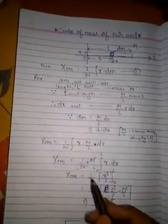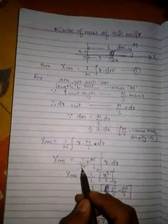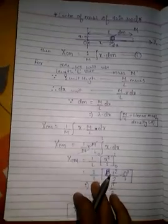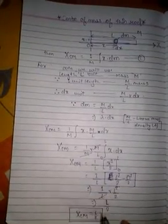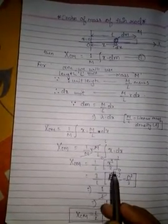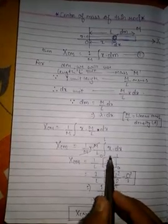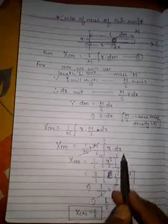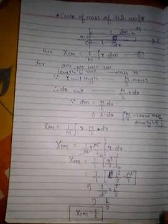Here we will cancel the mass m. Now the center of mass of the x coordinate is equal to 1 by l times the integration of x dx. We integrate it and the answer will be x square by 2 by the integration process.